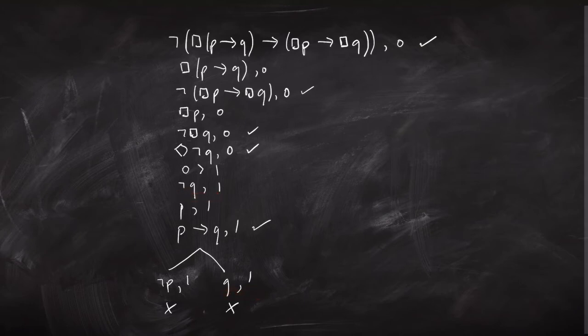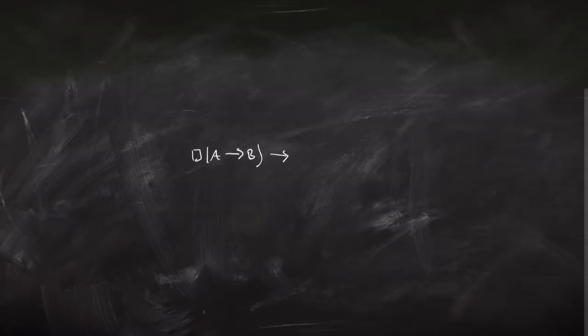We've got a finished, closed tree. So we've shown that the distribution axiom is in fact valid in modal logic. What I should have said is it's valid in all modal logics, because there's not just one modal logic — there's a whole bunch of different systems.